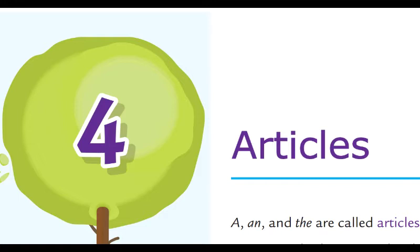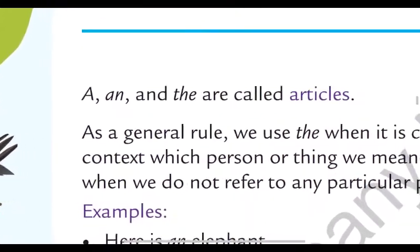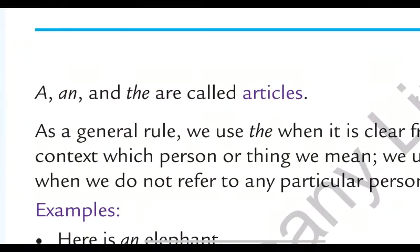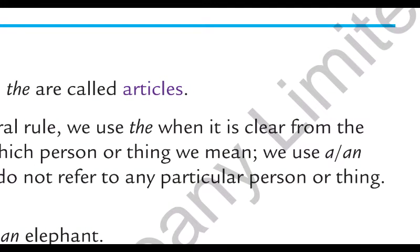As a general rule, we use 'the' when it is clear from the context which person or thing we mean. Jab hum context mein kisi person ya thing ke baare mein specific hain, ya particular person ya particular thing ke baare mein baat kar rahe hain, wahan par article 'the' ka use kiya jaata hai. We use 'a' or 'an' when we do not refer to any particular person or thing. Jab kisi particular person ya particular thing ke baare mein baat nahin ki jaati hai, wahan par 'a' ya 'an' ka use kiya jaata hai.